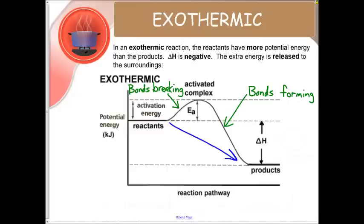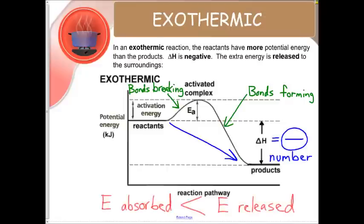We are going to end up at a lower level than we started with, which means our change in H this time is a negative number. This means that our energy absorbed was less than our energy released. We release much more energy for an exothermic reaction.